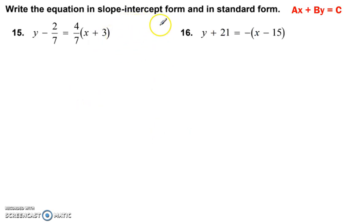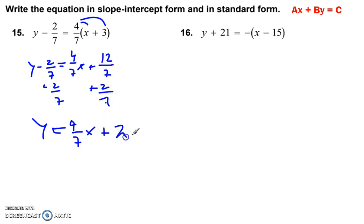Alright. Equation in slope intercept form and in standard form. Okay. So just distributive property here. 4 over 7x. And multiplying a fraction with a whole number. 3 times 4 gives me 12 over 7 is equal to y minus 2 over 7. Add 2 over 7 to each side and we get y is equal to 4 over 7x plus 14 over 7 is 2. Okay.